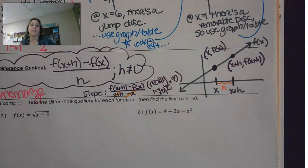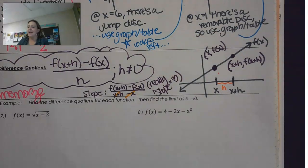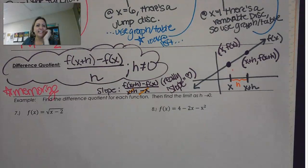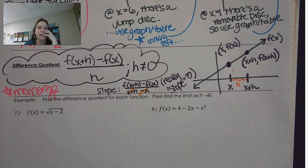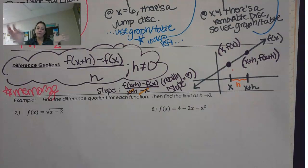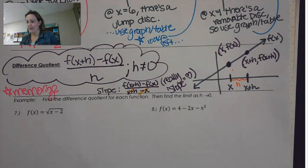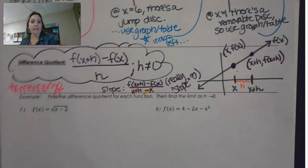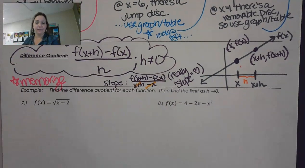We'll get more into that in the next section. But if you're wondering what the heck is the difference quotient — that's what it is, and that's why it's important: it helps us find slopes. For right now, we're just going to practice the idea of the difference quotient, and then we'll do fun stuff with it in the next section.